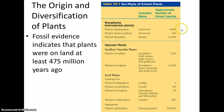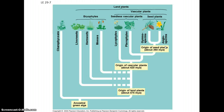Here are our plant types again. You can see the number of species in each type. Just note how the most recently evolved group of plants, the angiosperms, are the most diverse group and the group that humans most depend on. Looking at the evolutionary tree, the origin of land plants was almost 500 million years ago, vascular plants arose about 420 million years ago, and seed plants about 360 million years ago.